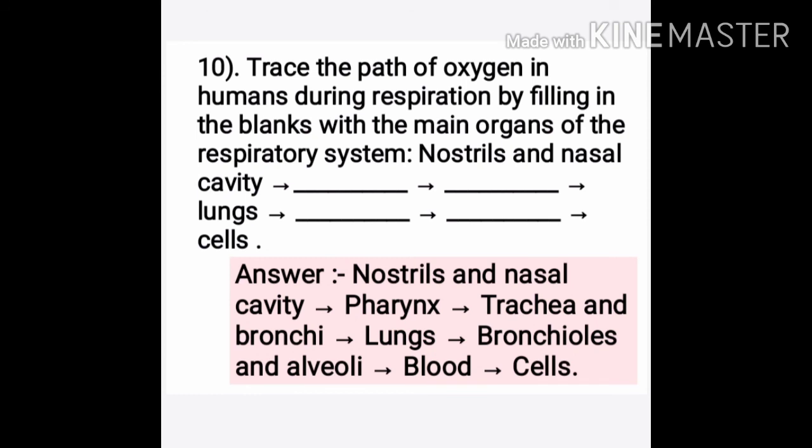Question ten: Trace the path of oxygen in humans during respiration. Air enters through the nostrils and nasal cavity, then moves to the pharynx, then to the trachea and bronchi, and from there to the lungs. Inside the lungs, air enters into bronchioles and then alveoli — the sack-like structures at the end of bronchioles. From alveoli, oxygen passes into the blood, and from blood into cells.